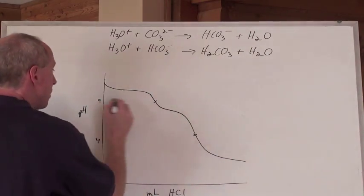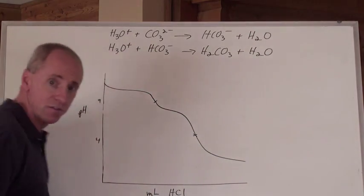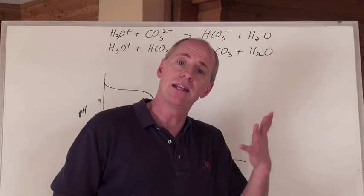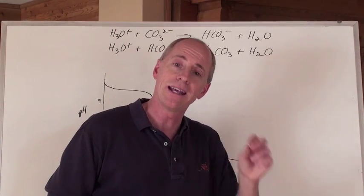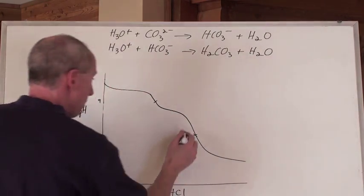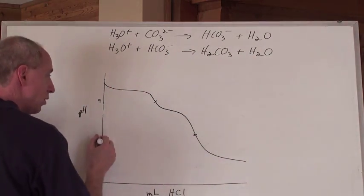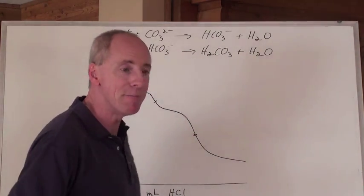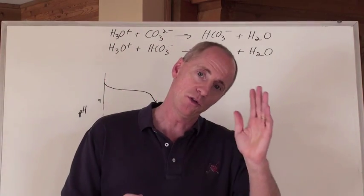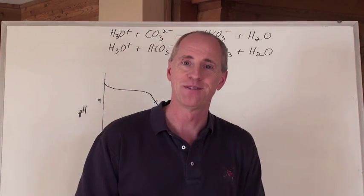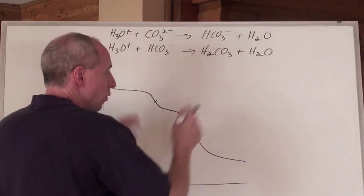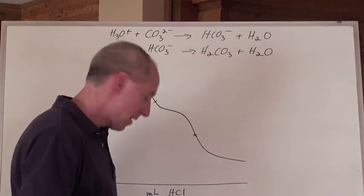What's a good indicator to use at pH 9? Phenolphthalein. If you wanted to indicate that equivalence point and get a color-change endpoint, at about pH 4 you would use something like methyl orange, which changes color from about 3.2 to 4.4. So that's the titration curve for that equation.